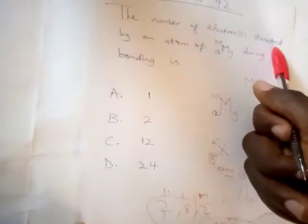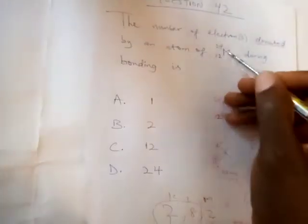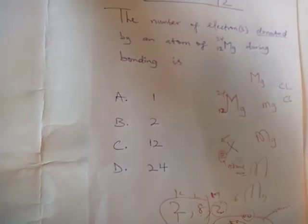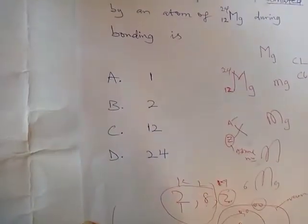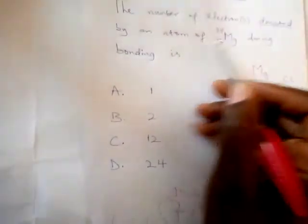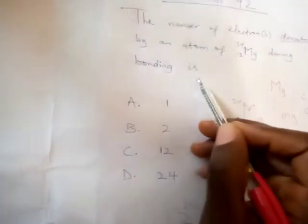So the number of electrons donated, that's why they said donate. Magnesium metals already donate, they easily donate. You know, so you find metals in group 1, group 2, and group 3, they easily donate, donated by an atom of magnesium during bonding, is what?